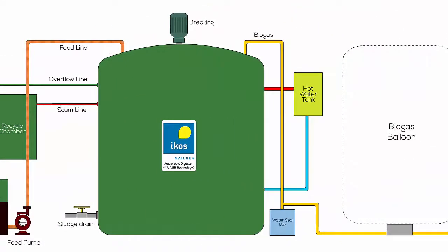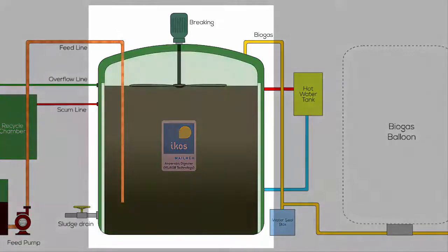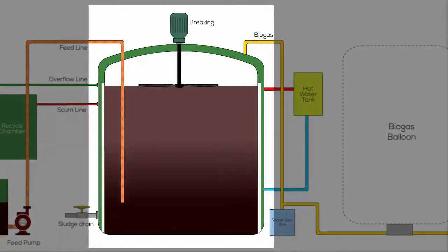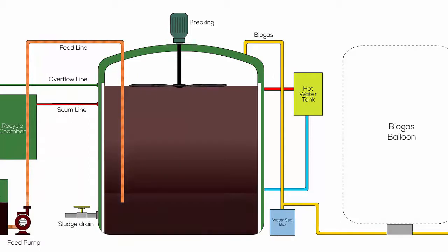Hemikos designs these digesters on a unique modified upflow anaerobic sludge blanket technology. These digesters comprise of internal proprietary modules, baffles, and launder system, which helps to retain the solids inside the digester for a longer time, and hence higher degradation of organic material can be achieved.